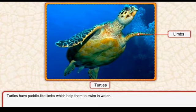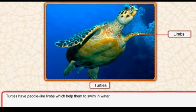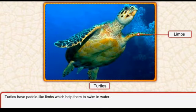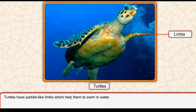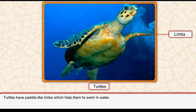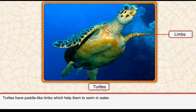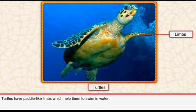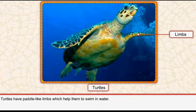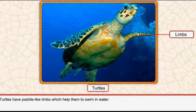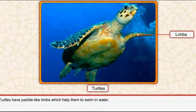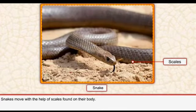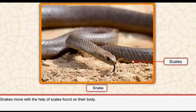Turtles have paddle-like limbs which help them to swim in water. Limbs hum haathon aur paaon ko kehte hain - arms jo hoti hain unko fore limbs kehte hain aur jo legs hoti hain unko hind limbs kehte hain. Jo turtle hota hai woh apne limbs - apne haathon aur paaon - ko istemal karta hai aur is ki madad se paani mein swim karta hai.